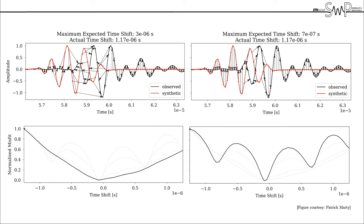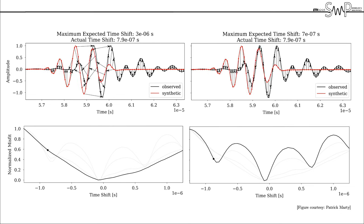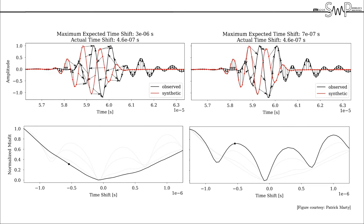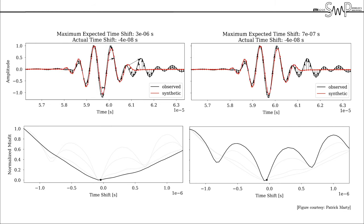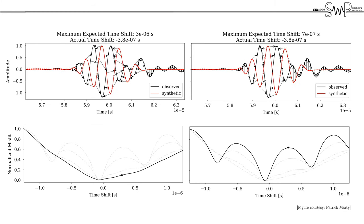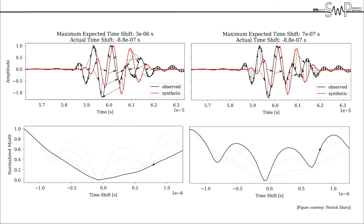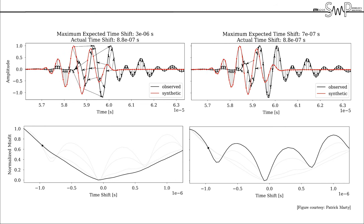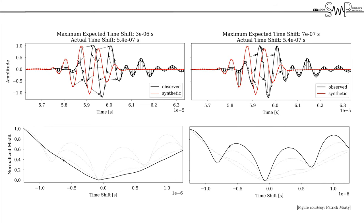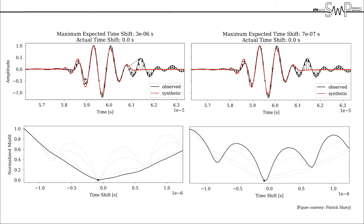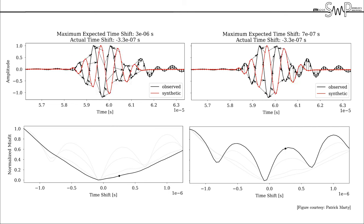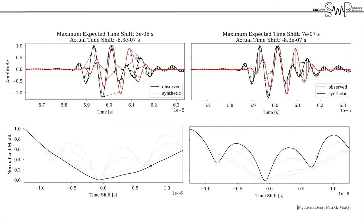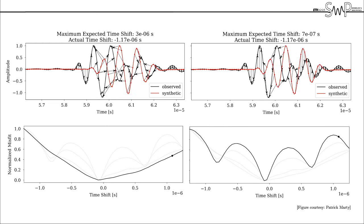What you see in the upper row is an exemplary time window on an observed and synthetic data trace. In the animation you see the synthetic trace sliding through the window resulting in different phase shifts with respect to the observed trace. The fundamental idea of graph space optimal transport is now to consider each trace as a separate point cloud. The goal is then to find an assignment that maps the synthetic points onto the observed ones such that the energy for each individual mapping of a point is minimized.